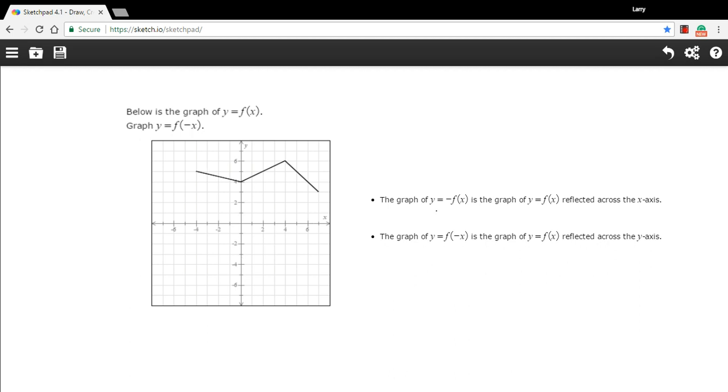The things you should be looking for in problems like this: when they ask you to graph y equals negative f(x), that is a reflection across the x-axis, so whatever is on top would go on bottom and whatever's on the bottom would go on the top. If they're asking you like they are in this problem to graph y equals f(negative x), that's a reflection over the y-axis, so left goes to right and right goes to left.